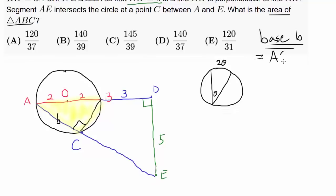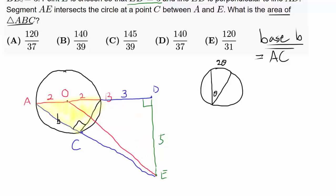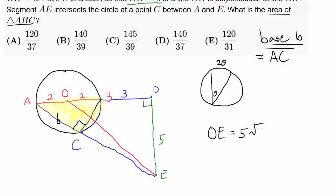Now the question is how to find base AC. Let's go back to what we noticed: OD equals 5 and ED also equals 5. The natural thing to do is connect O and E. Now we have an isosceles right triangle with legs of length 5. Isosceles right triangles are particularly useful in geometry because we know the ratio between the sides. So OE equals 5 times square root of 2.